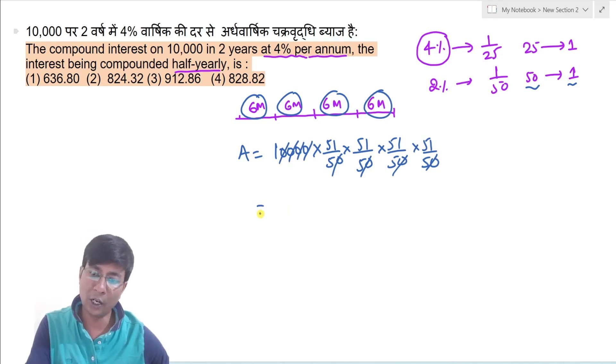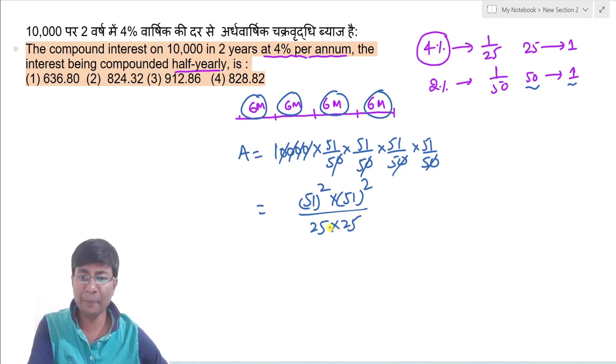Ye four zero se four zero four zero cancel out ho jayega, ye sara khatam ho jayega. Toh ultimately amount jayega, woh kitna hoga, woh hoga 51 square, into 51 square, divided by 25 into 25.